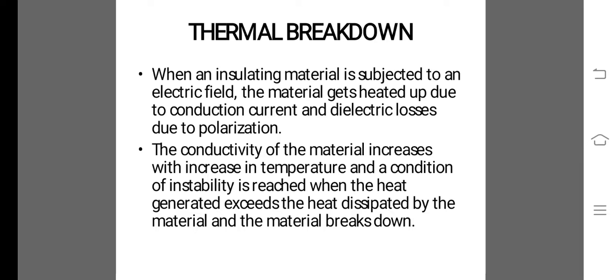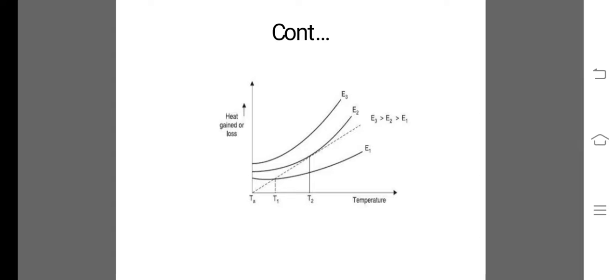Thermal breakdown: when an insulating material is subjected to an electric field, the material gets heated up due to conduction current and dielectric losses due to polarization. The conductivity of the material increases with increase in temperature, and the condition of instability is reached when the heat generated exceeds the heat dissipated by the material and the material breaks down.